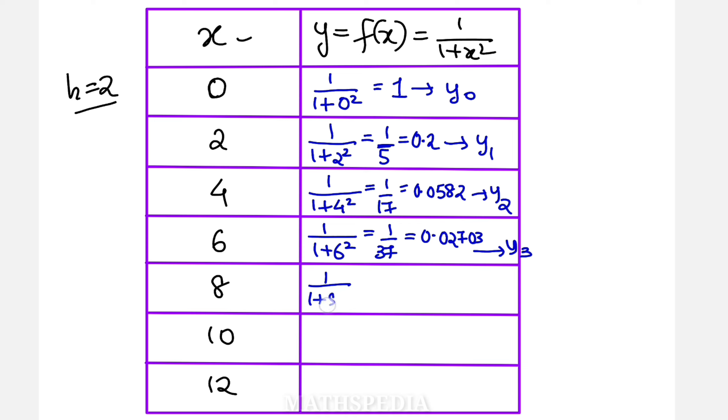1 by 1 plus 8 square, 1 by 65, which is equal to 0.01538, and this is y4. 1 divided by 1 plus 10 square.